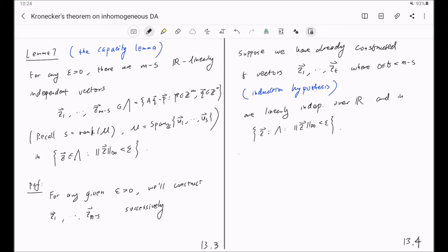Then, if you look at this subspace, the R span of Z1 through ZT together with U1 through Us. Because our T here is strictly less than M minus S, this is a proper subset of R^M. Namely, S plus T is less than M. So the dimension cannot be greater than M minus 1.